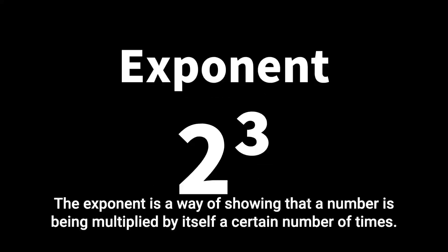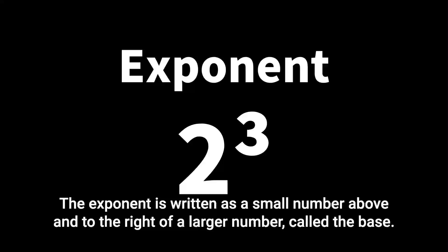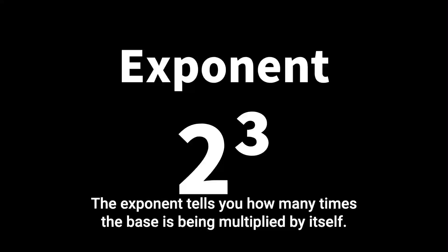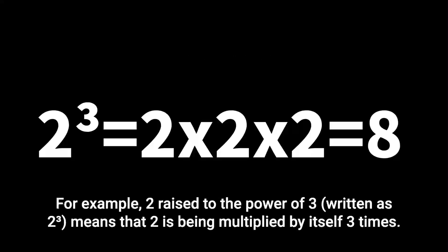An exponent is a way of showing that a number is being multiplied by itself a certain number of times. The exponent is written as a small number above and to the right of a larger number called the base. The exponent tells you how many times the base is being multiplied by itself. For example, two raised to the power of three means that two is being multiplied by itself three times.